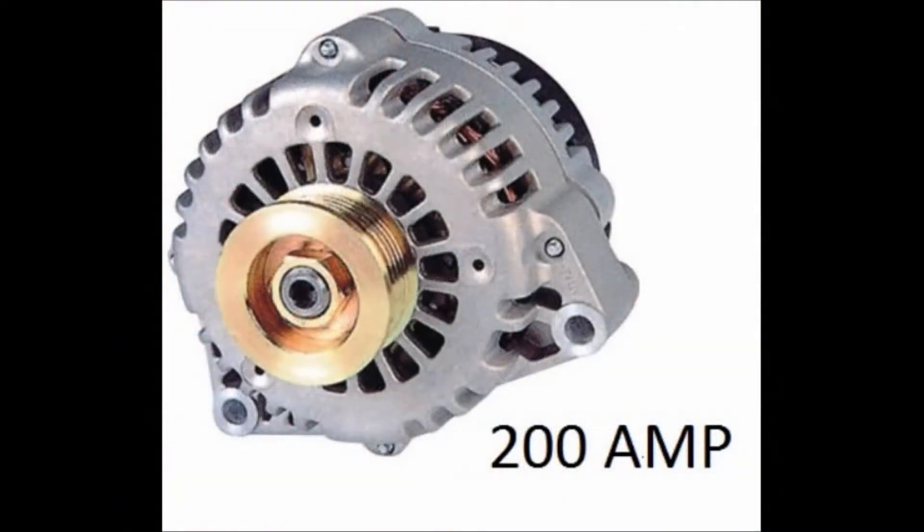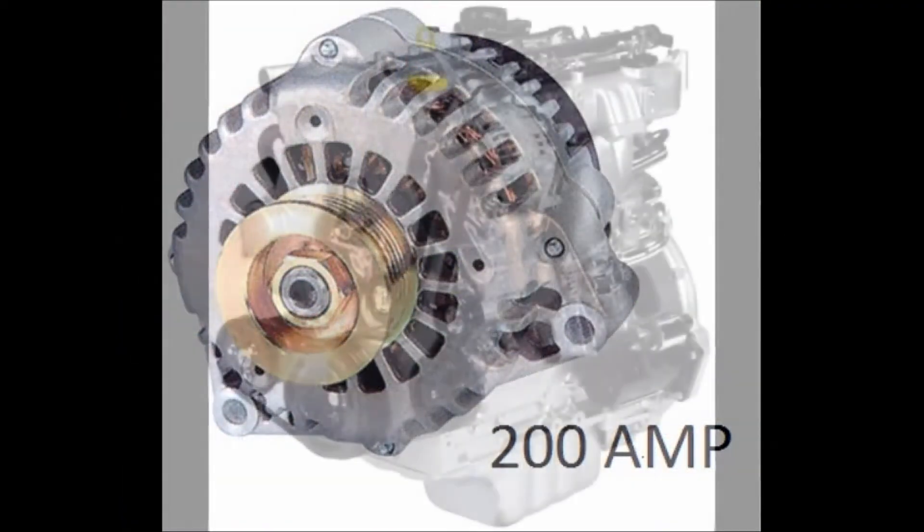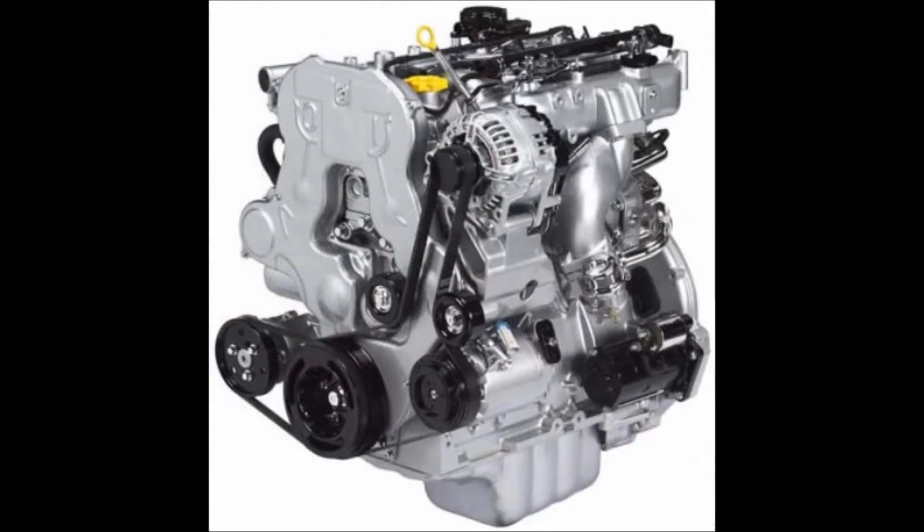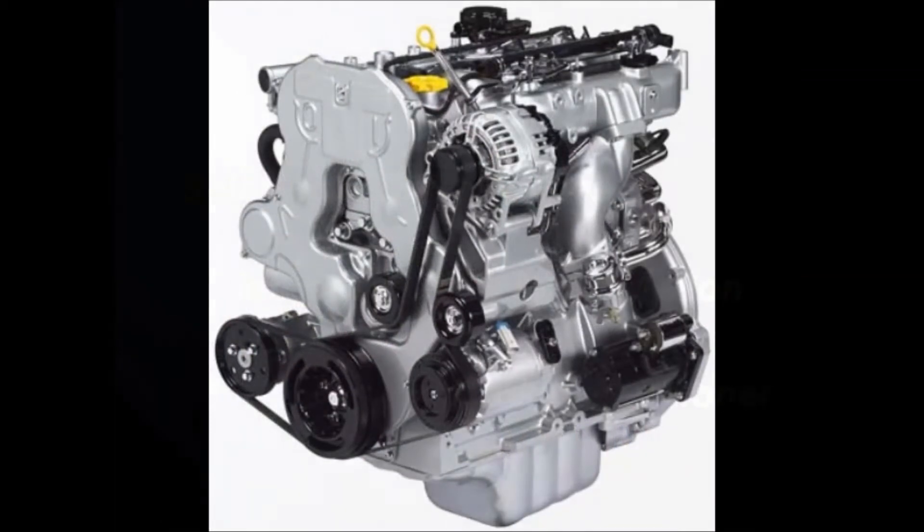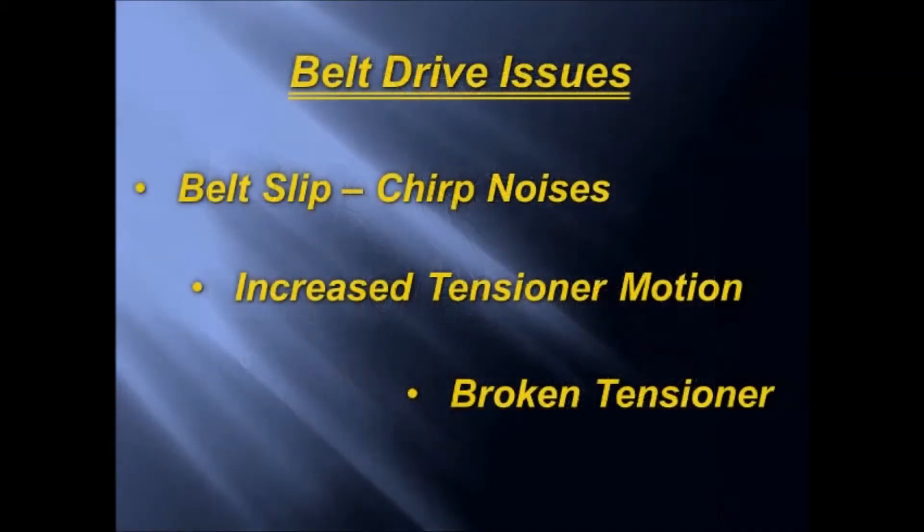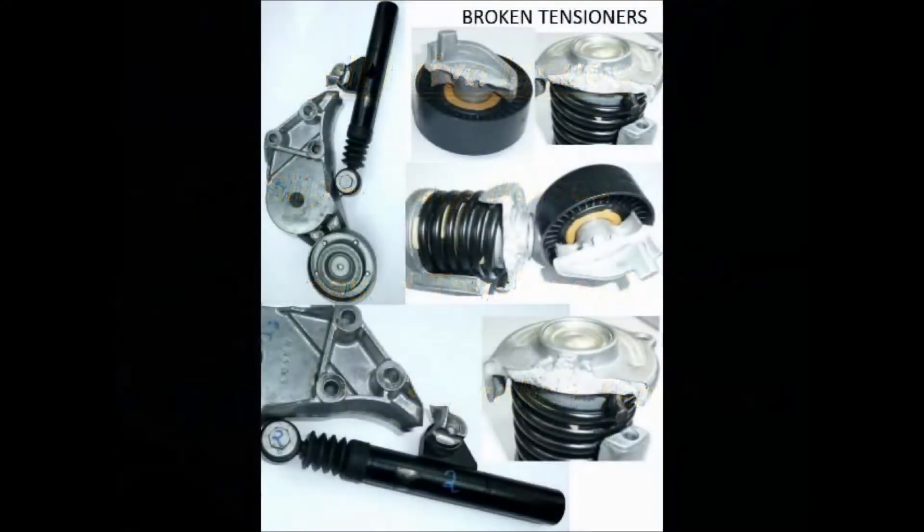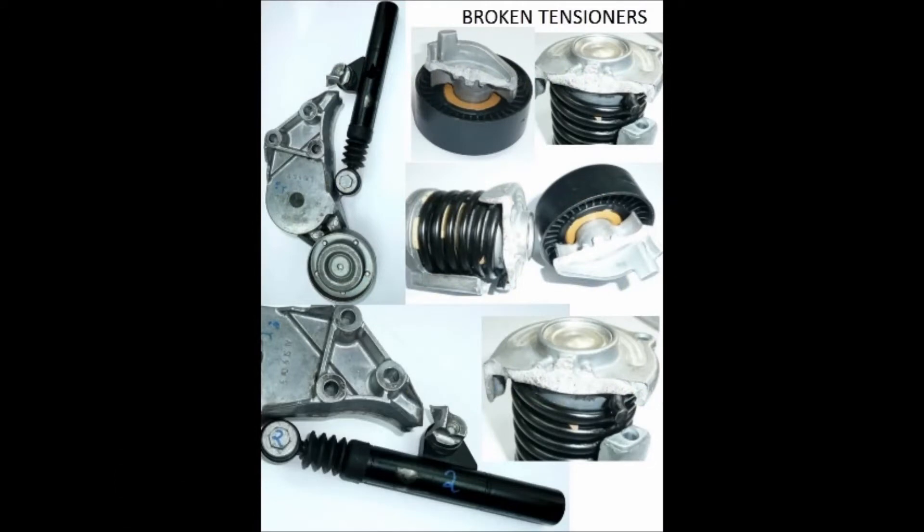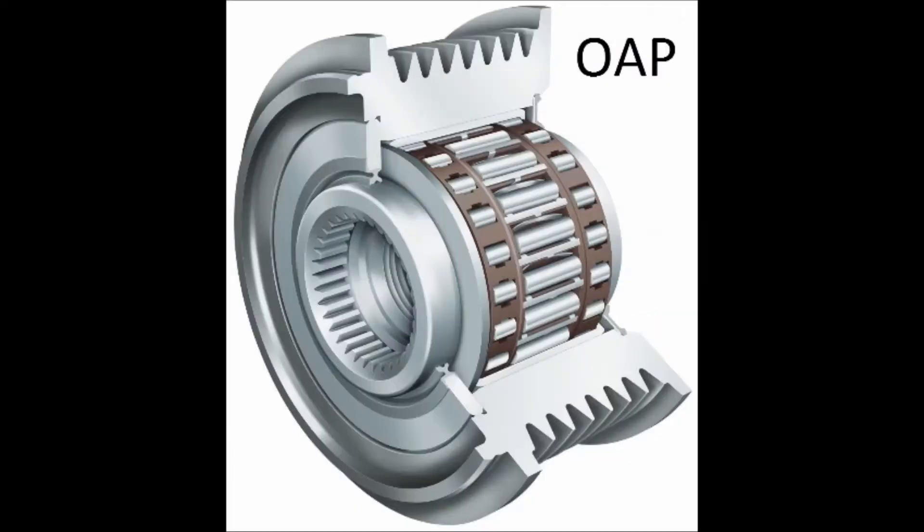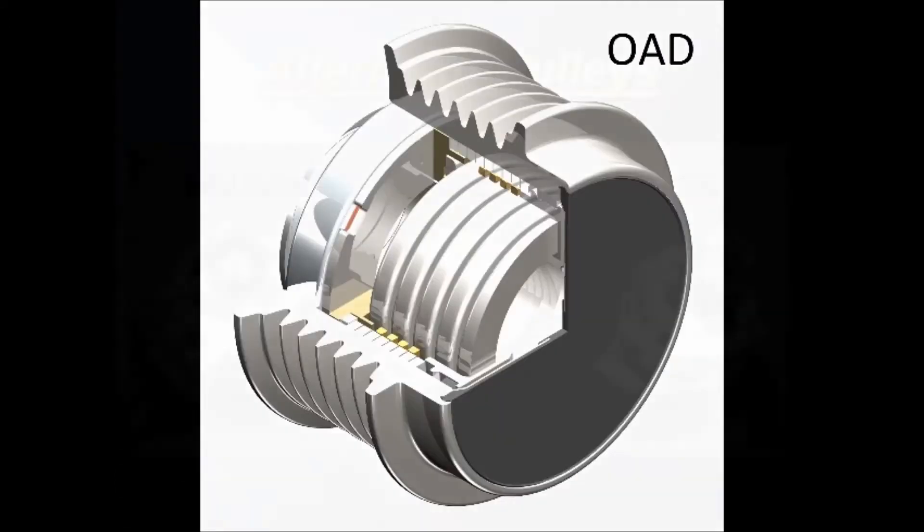It is these larger alternators with more mass coupled with newer, more fuel efficient engines that are causing problems for the serpentine belt drive system. Some of these issues include belt slip, which leads to chirping noises, increased belt tensioner motion and broken tensioners. These belt drive issues are being addressed by car manufacturers by utilizing newer technologies including OAPs and OADs on the alternator.